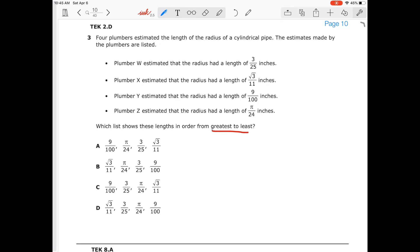So 3 divided by 25 will give me 0.122, and the square root of 3 divided by 11, that's going to give me 0.157, and then 9 divided by 100, that's going to give me 0.09.